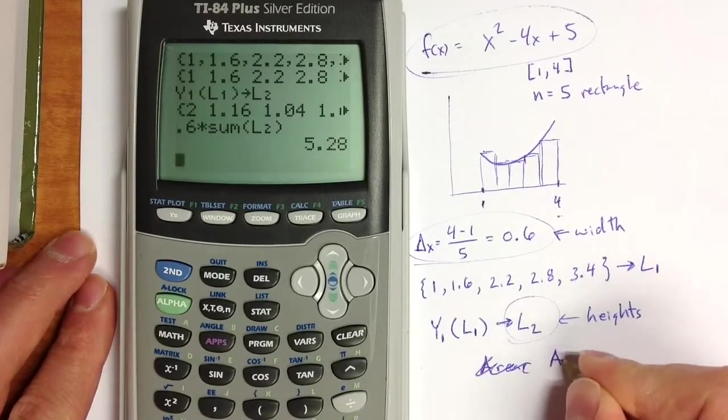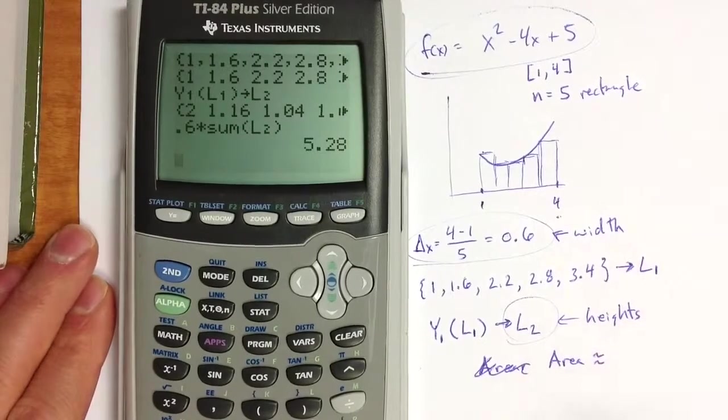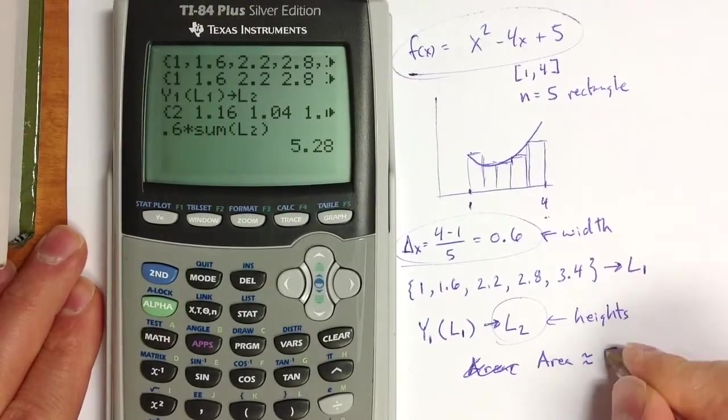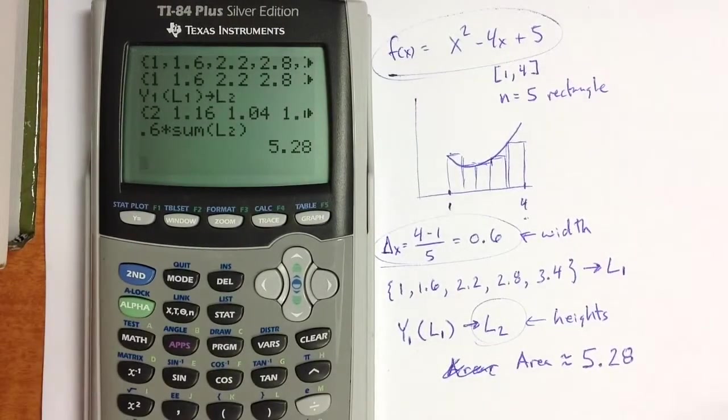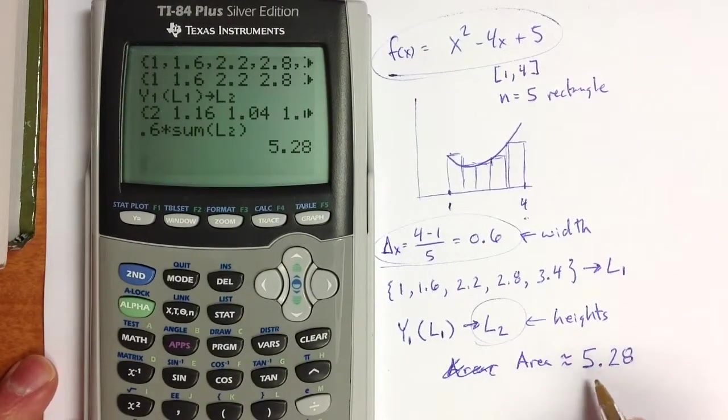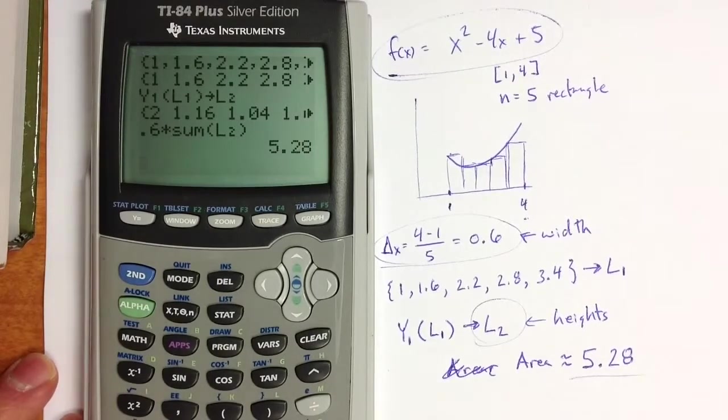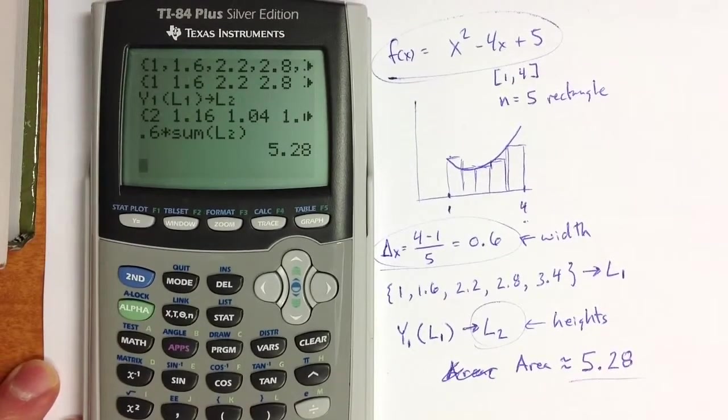The area under the curve is approximately equal to 5.28. Of course, using more rectangles would give us a better approximation, but this is the one that we chose, or the one that I chose, I guess, with 5 rectangles. All right. Thanks.